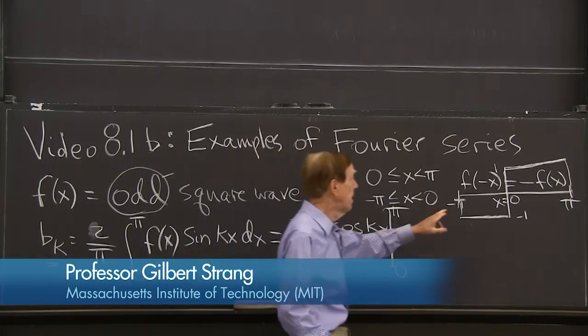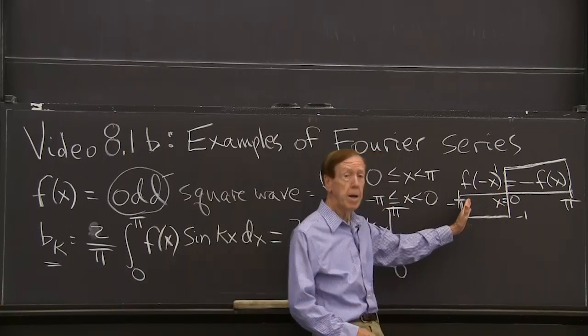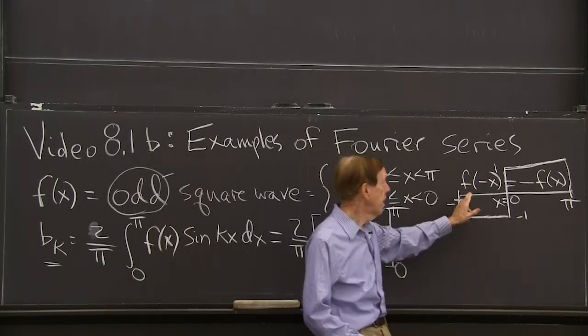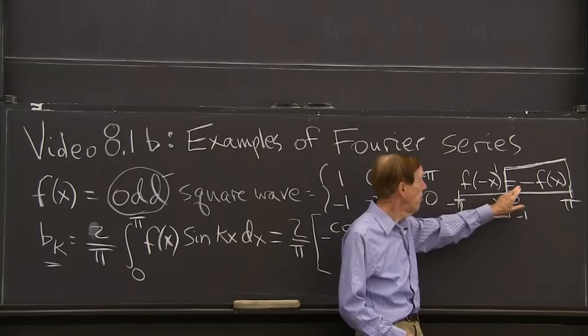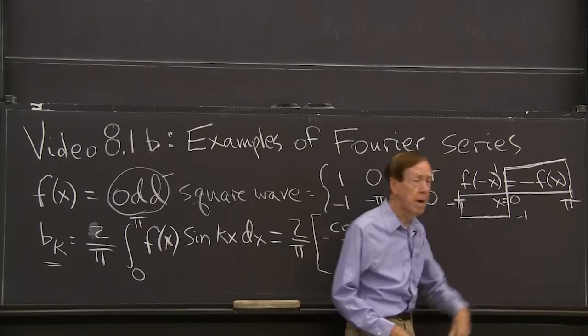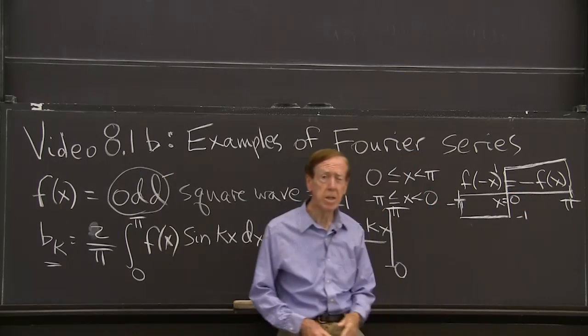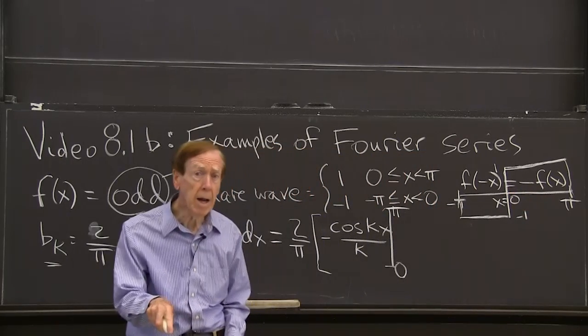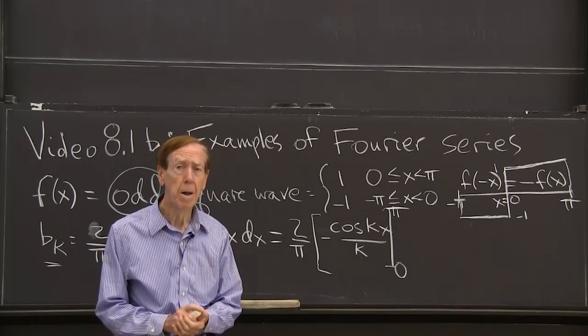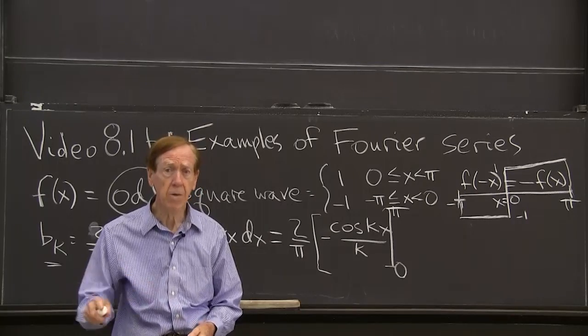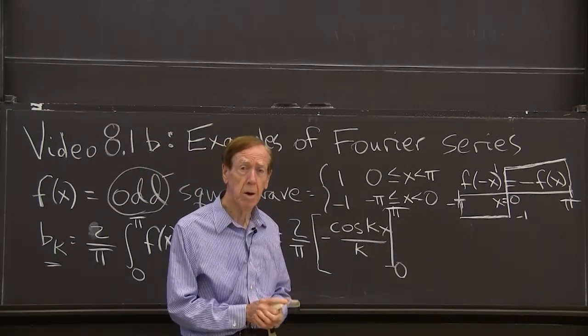My odd function means that on the left side of 0, I get the negative of what I have on the right side of 0. f at minus x is minus f of x. And it's the sine function that's odd. The cosine function is even, and we will have no cosines here.